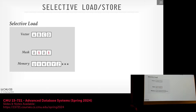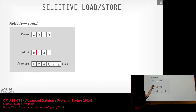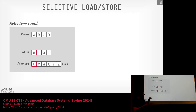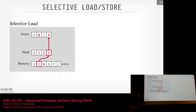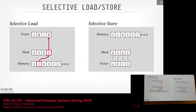Selective load: take contents from memory and write them into a vector register based on a mask. Where the mask is 0, skip that lane. Where the mask is 1, grab the next sequential value from the input memory buffer and write it to that lane. Selective store is the reverse: where the mask is 1, write from the vector register out to the next sequential memory position. Both happen in a single instruction.